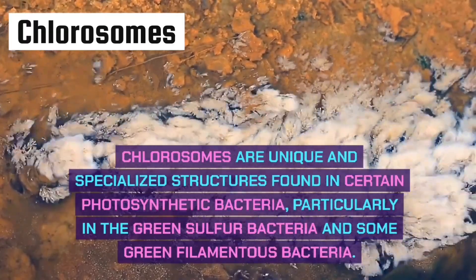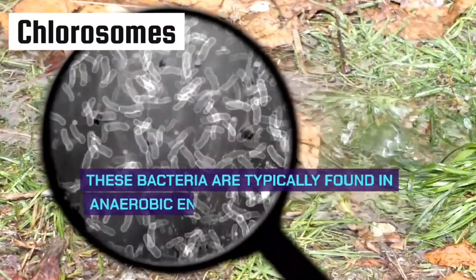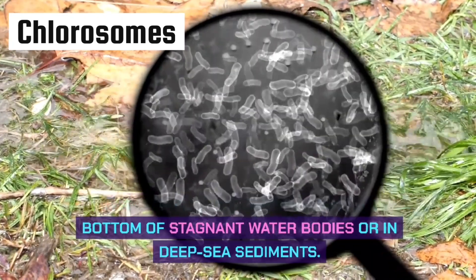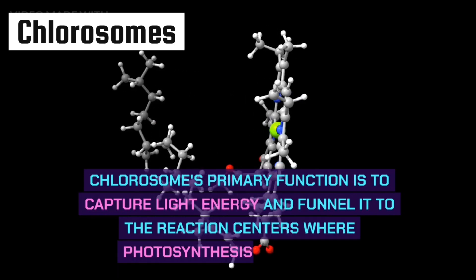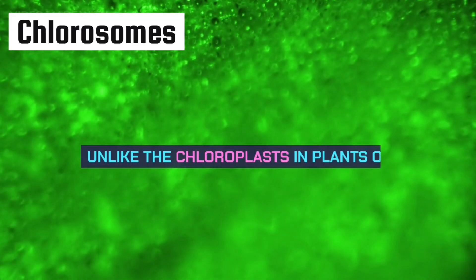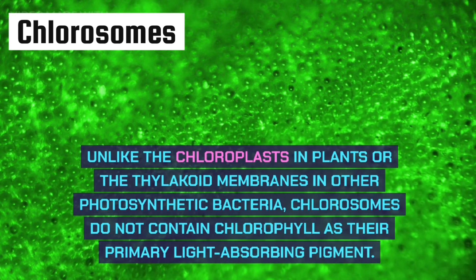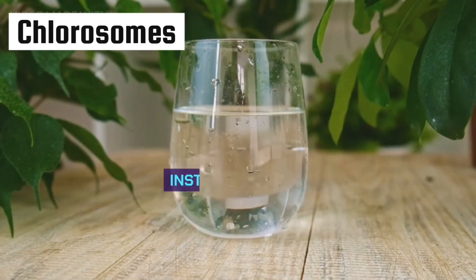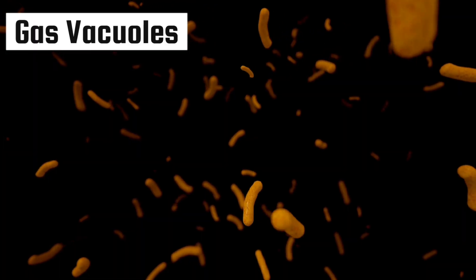Chlorosomes are unique and specialized structures found in certain photosynthetic bacteria, particularly green sulfur bacteria and green filamentous bacteria. These bacteria are typically found in anaerobic environments such as the bottom of stagnant water bodies or in deep sea sediments. Chlorosomes' primary function is to capture light energy and funnel it into photosynthesis. Unlike chloroplasts, chlorosomes do not contain chlorophyll as the primary light-absorbing pigment; instead they use bacterial chlorophylls, which are similar to chlorophylls but with some structural differences.